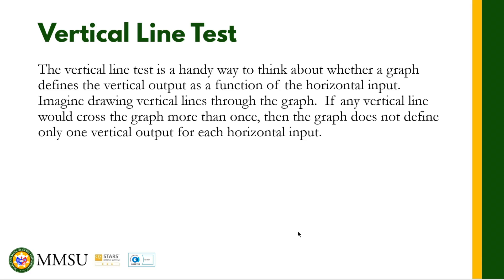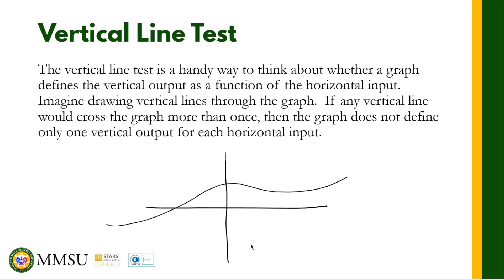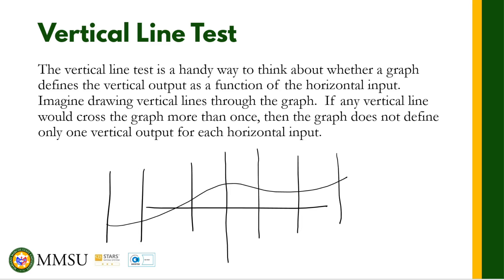The vertical line test is a handy way to think about whether a graph defines the vertical output as a function of the horizontal input. Imagine drawing vertical lines through the graph. If any vertical line would cross the graph more than once, then the graph does not define only one vertical output for each horizontal input. A vertical line should only intersect the graph at most one point.